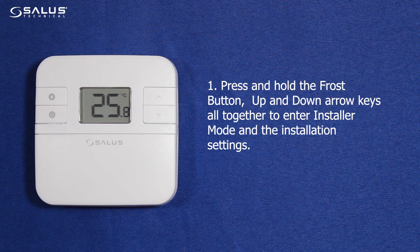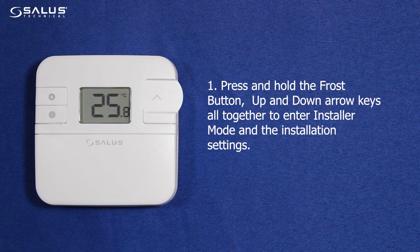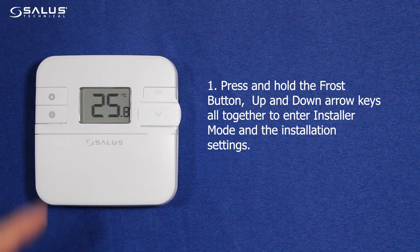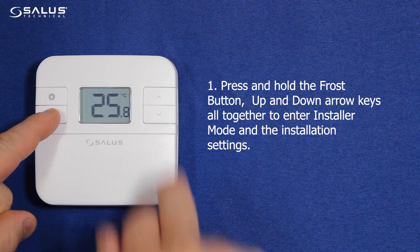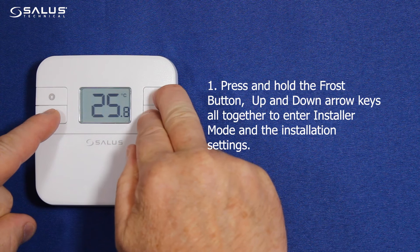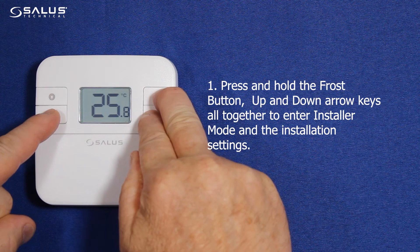Step 1: Press and hold the frost button, up arrow, and down arrow keys all together to enter Installer Mode and the installation settings.